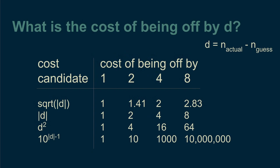In all these cases, the cost goes up as the estimate gets further away from the actual count of the bag. For our purposes, we'll start with the squared deviation. That's our cost function.